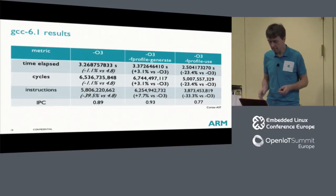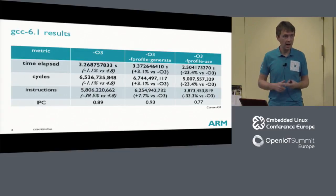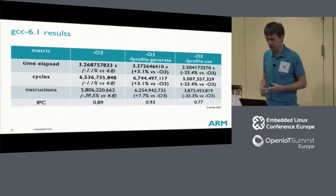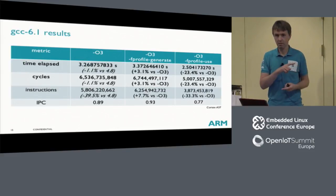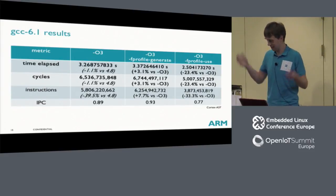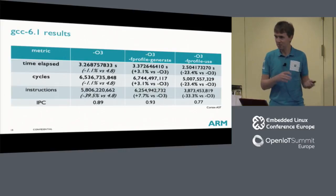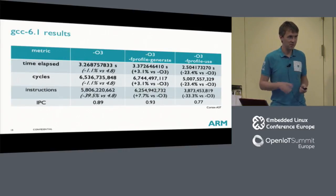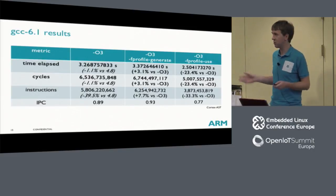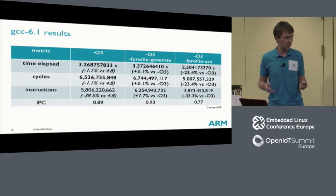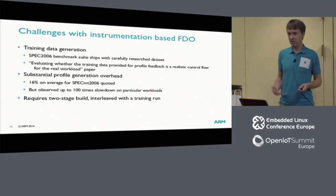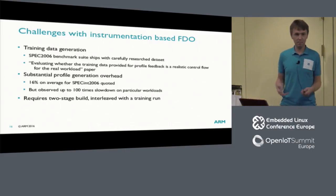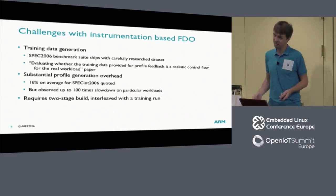Have a look at the IPC — it's pathetic, below 1. And the code still runs faster in wall-clock time. IPC is not always a direct proxy for code efficiency. If anyone wants to chat about that later, I can talk for hours. Now, if we can get 23% improvement for free practically, why isn't it used by everyone every day? Because it's not really free.